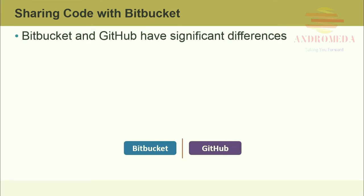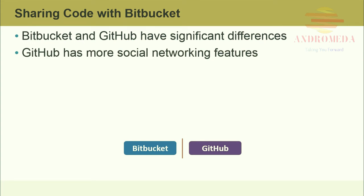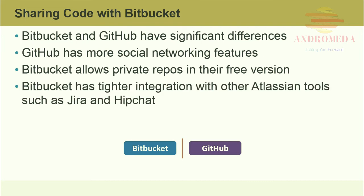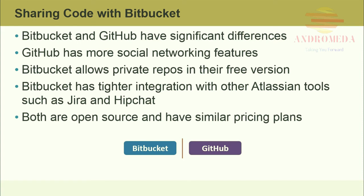Bitbucket and GitHub have significant differences. GitHub has more social networking features — the look-at-me vibe of GitHub might turn off more quiet and refined developers who churn to Bitbucket. Bitbucket allows five private repositories in their free version, while GitHub allows private repos only with a paid subscription. Bitbucket has tighter integration with other DevOps tools such as Atlassian-owned Jira and Confluence. Both are open source and have relatively similar pricing plans, with plans becoming more expensive as the use of private repositories grows.